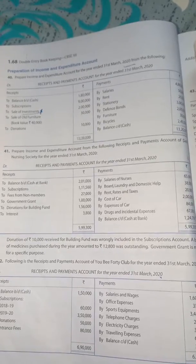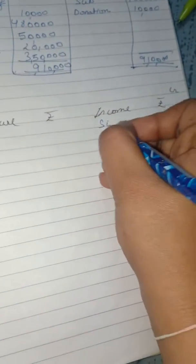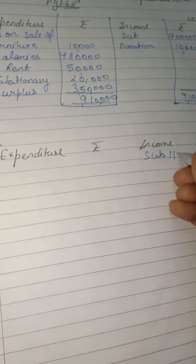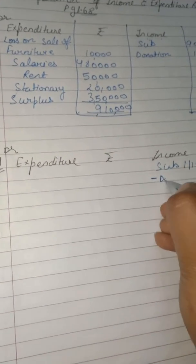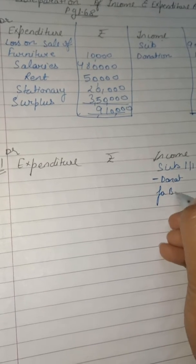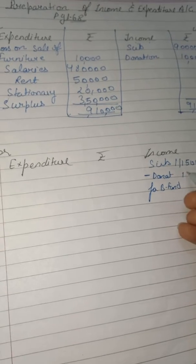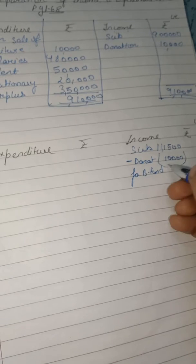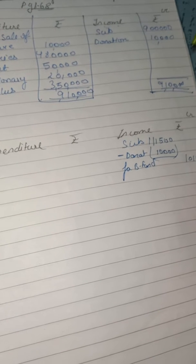Now starting from subscription — in the question, subscription is given. And in the question it was said that we had included a donation for building fund of 10,000 in it, so we will deduct 10,000 from it. So our amount comes to 1,15,000.